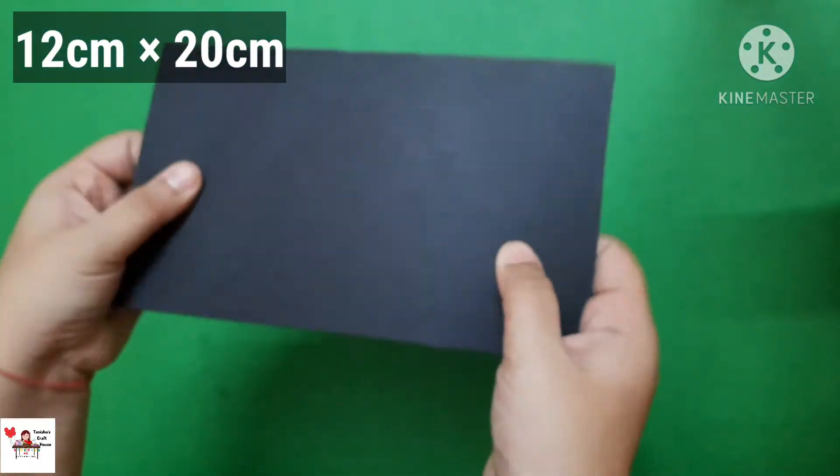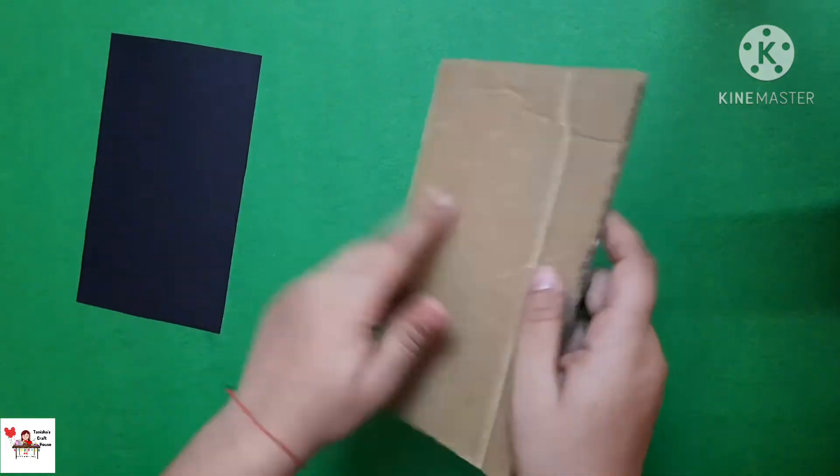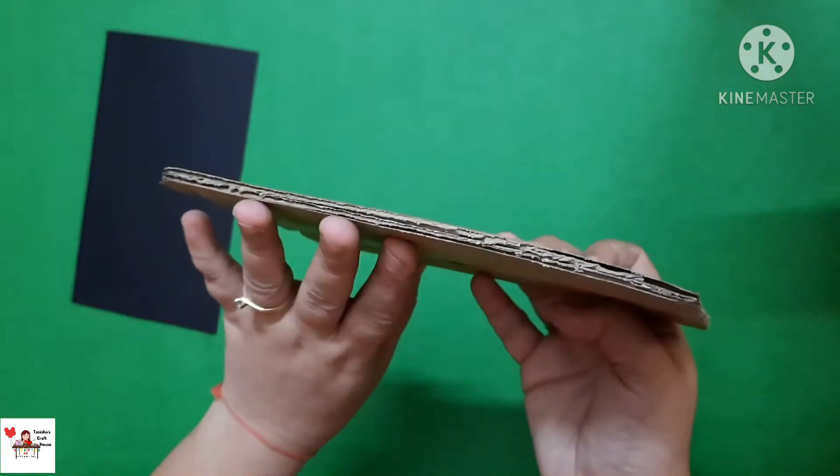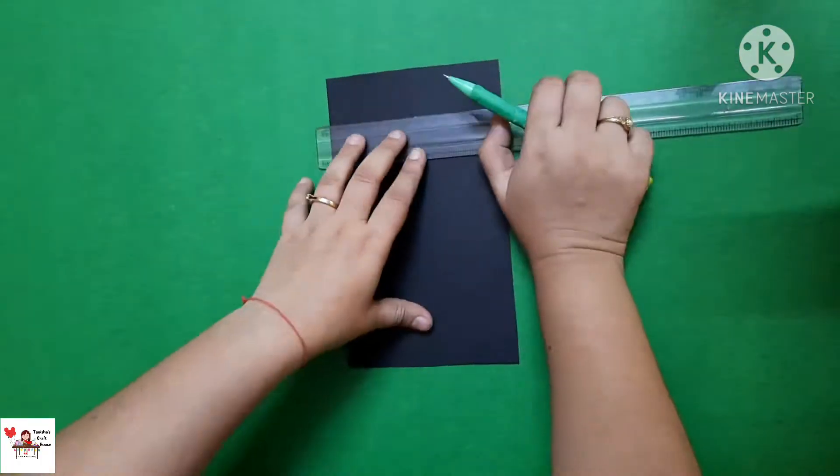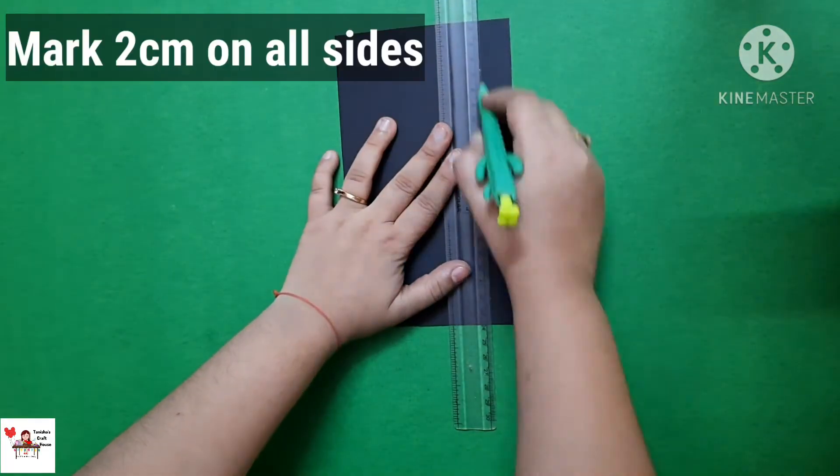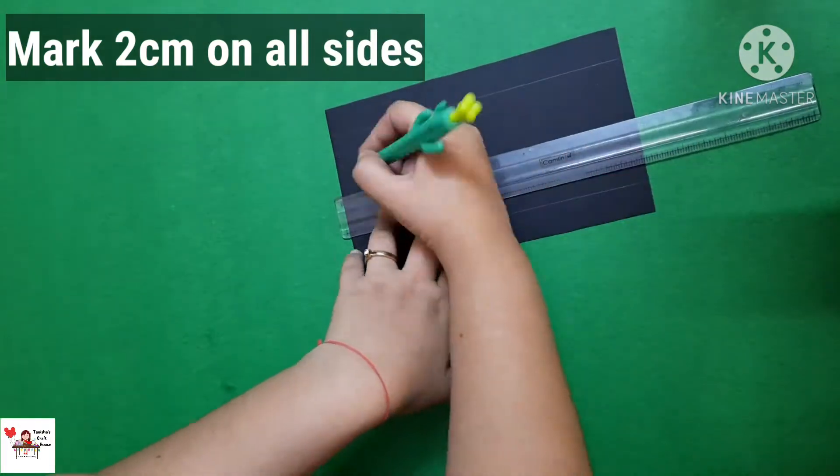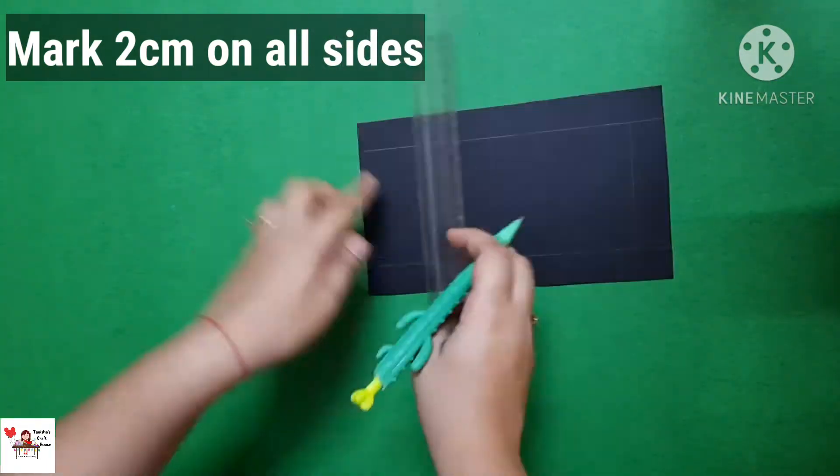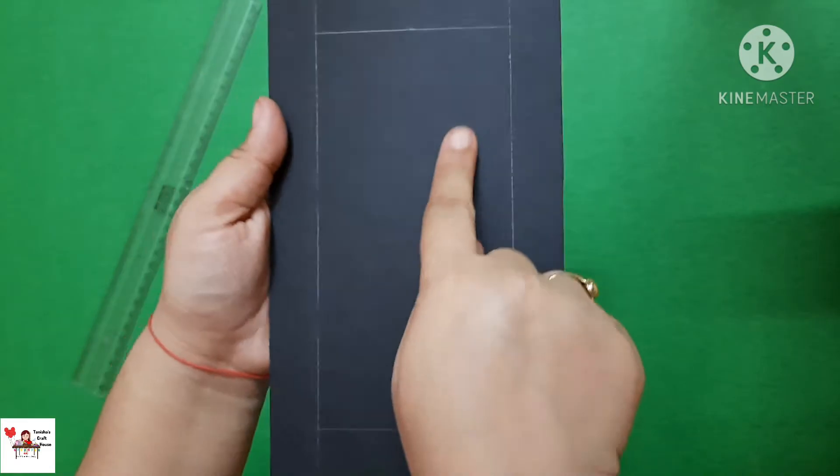I had a black cardboard so I just took that. If you don't have this you can definitely take any kind of cardboard you have at home and then you can just paint it black. Now I'm gonna mark two centimeters on all the sides and then we are going to cut the middle part and make it like a frame.